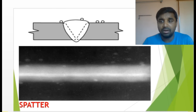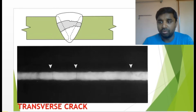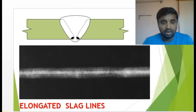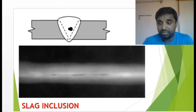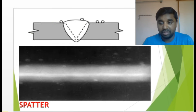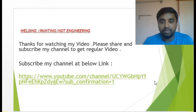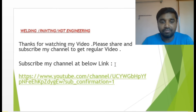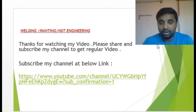So this is the basic film interpretation covered in CC 3.1 of the welding spectrum in the GWI course. This covers the main and basic film interpretation — the types of defects and how they look, and how to interpret them. I think everybody has understood these defects and how they look in the radiograph image. Please give your valuable feedback, and thanks for watching. Don't forget to subscribe to my channel using the link below.